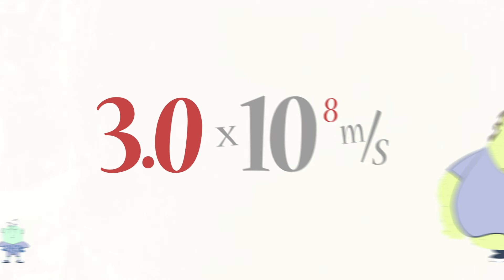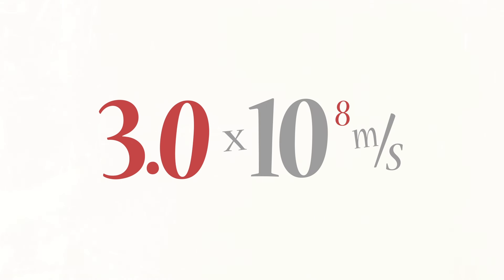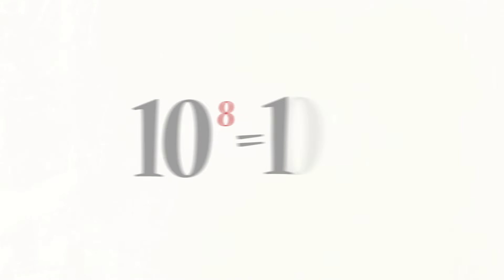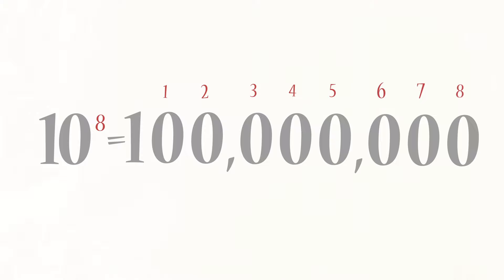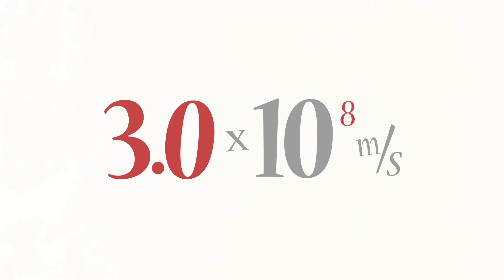Correct scientific notation requires that the first term range in value such that it is greater than 1 but less than 10, and the second term represents the power of 10, or order of magnitude, by which we multiply the first term.